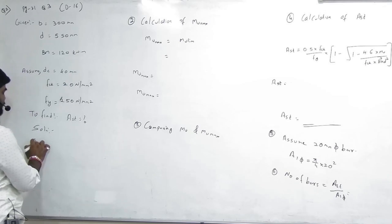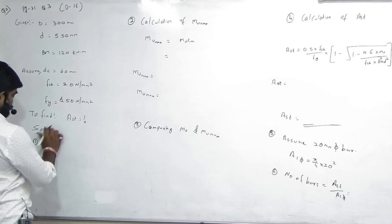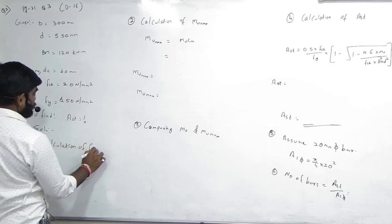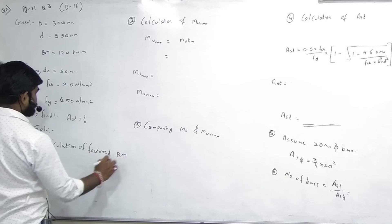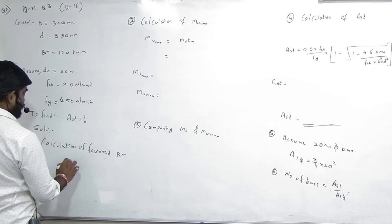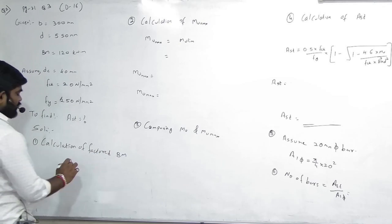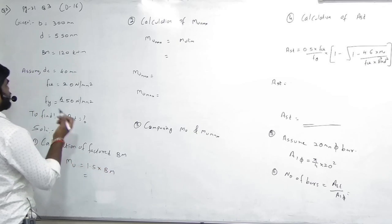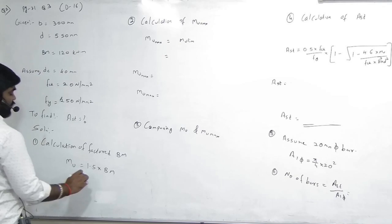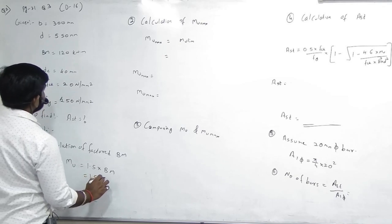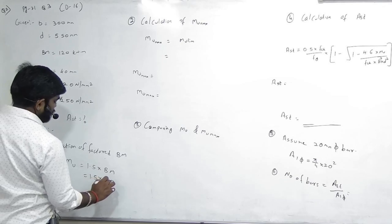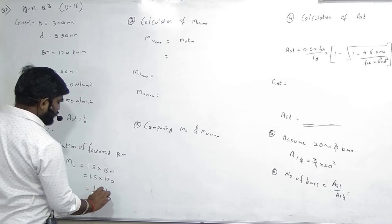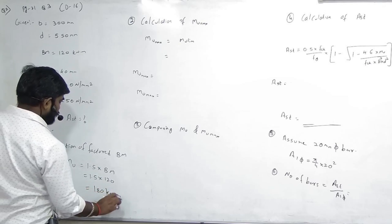Direct start karenge. Factor bending moment — MU ya MD bolte hain? MU. MU = 1.5 × BM. DC ki zaroorat nahi is sum mein, sirf assume karke chhod diya. 1.5 × BM = 1.5 × 120 = 180 kNm.